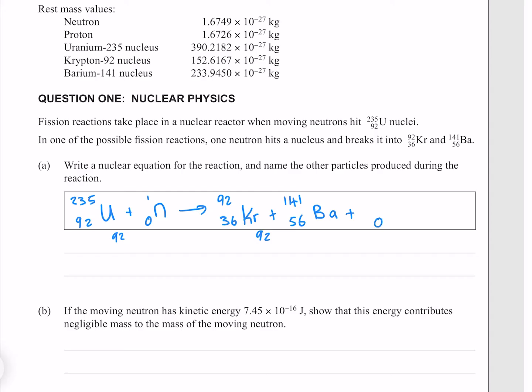Looking at our atomic masses, they add to 236, whereas on this side, they add to 233. Meaning that we have 3 unaccounted for atomic masses.